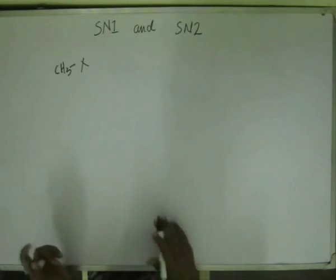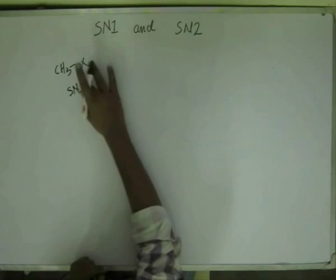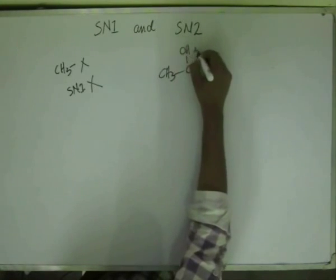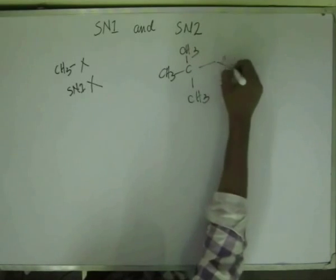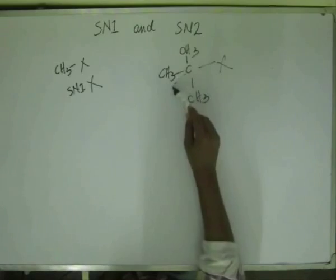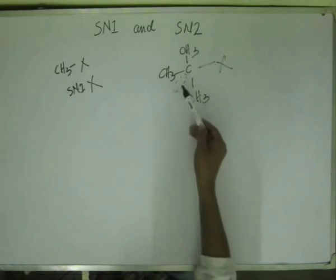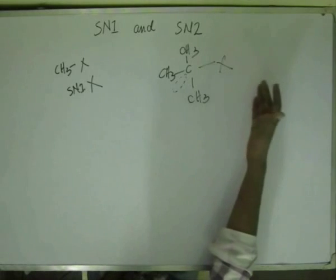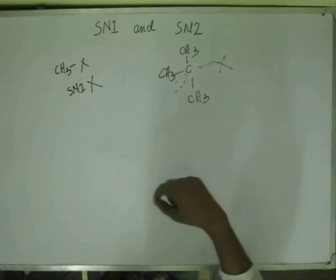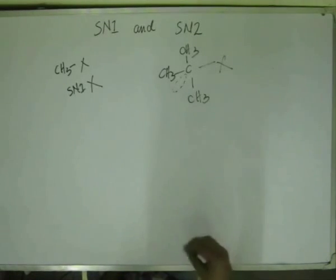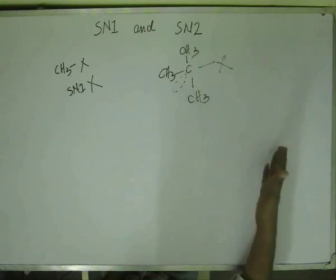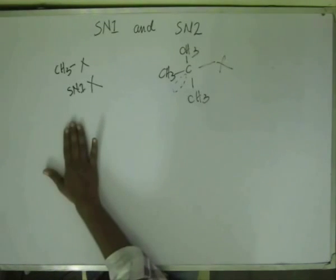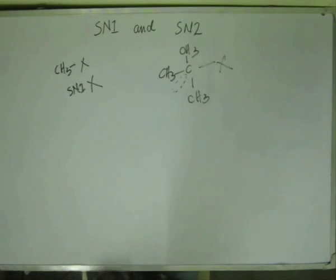So SN1 is not possible for methyl halide. Similarly, if we have a tertiary (3°) alkyl halide, the steric hindrance is so high that a nucleophile cannot reach near the vicinity of the antibonding orbital. So SN2 will not be initiated in the case of a 3° alkyl halide — the nucleophile will not be able to put its electrons into the antibonding orbital.